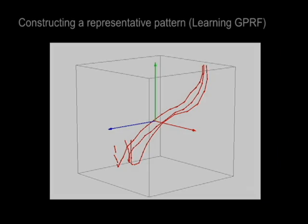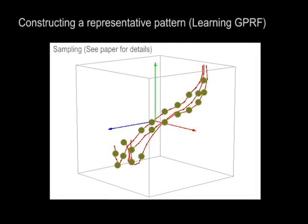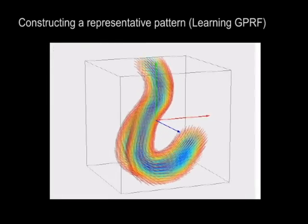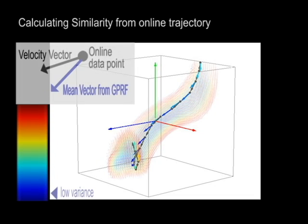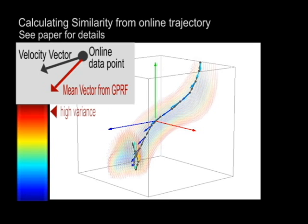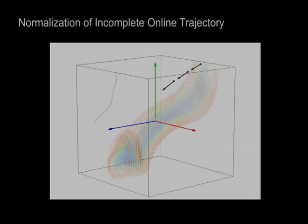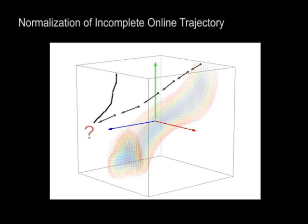We can construct a GPRF for a class of trajectories by sampling points from more than one trajectory at each time step, as described in the paper. The similarity between an input trajectory and the class can be computed by comparing each velocity vector in the trajectory against the corresponding mean vector in the class GPRF. For online or incomplete trajectories, we scale the trajectory along the time axis to maximize the global likelihood.